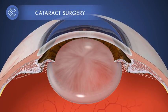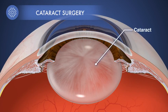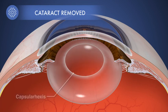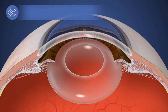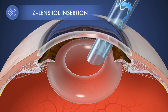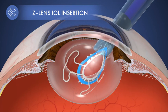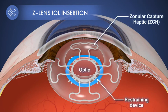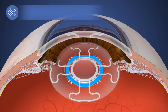When the natural lens becomes cloudy because of age, cataract surgery is required. During surgery, a hole is made in the capsular bag — called a capsulorhexis — and the natural lens is removed through it. The Z-Lens is then inserted into the now-empty capsular bag with the restraining device holding it flat. The capsular bag collapses and adheres to the haptics of the Z-Lens.